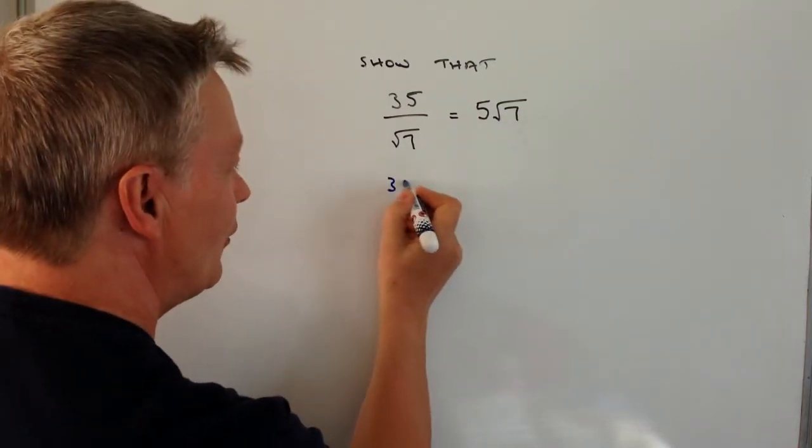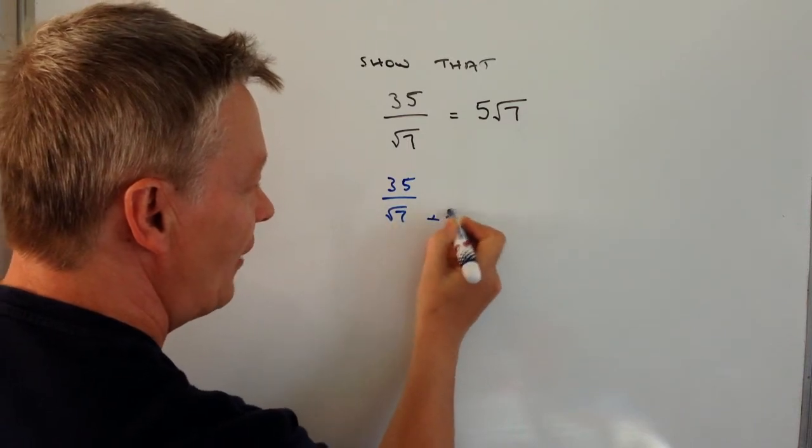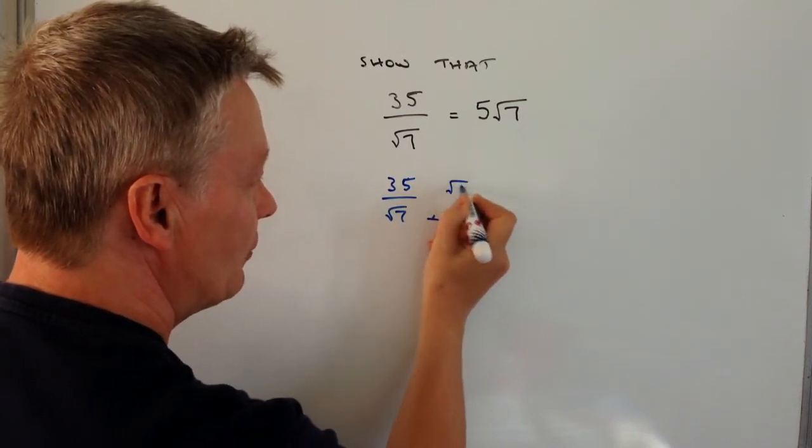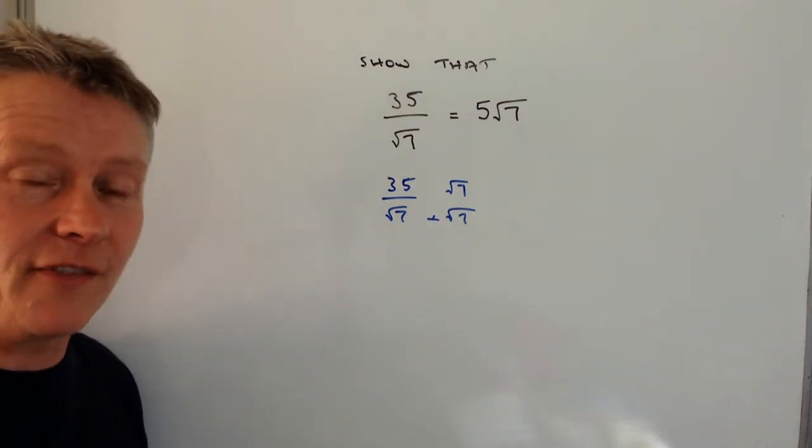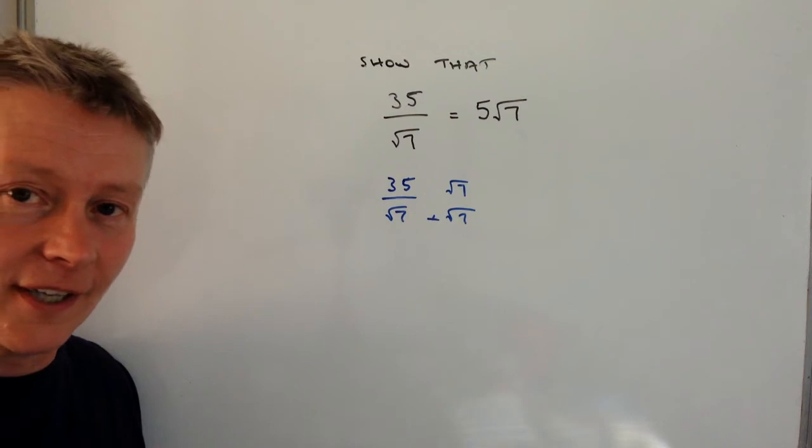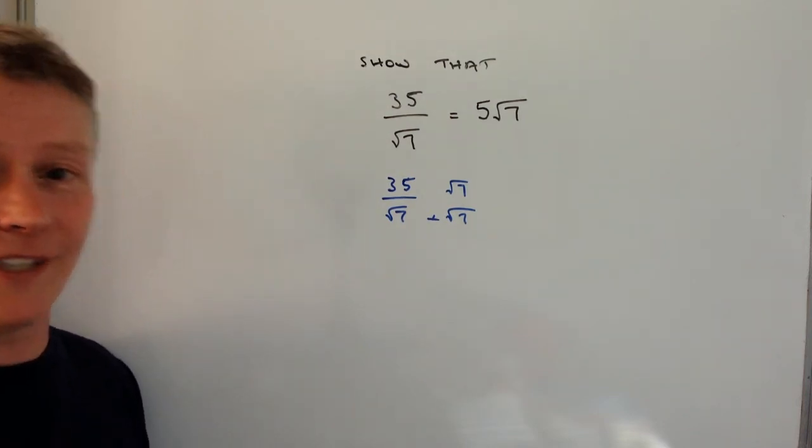So if we've got 35 over root 7, if I multiply the top and the bottom by root 7, it basically means at the bottom I get root 7 times root 7 which is root 49. That's a square number and the square root of 49 is 7 itself.